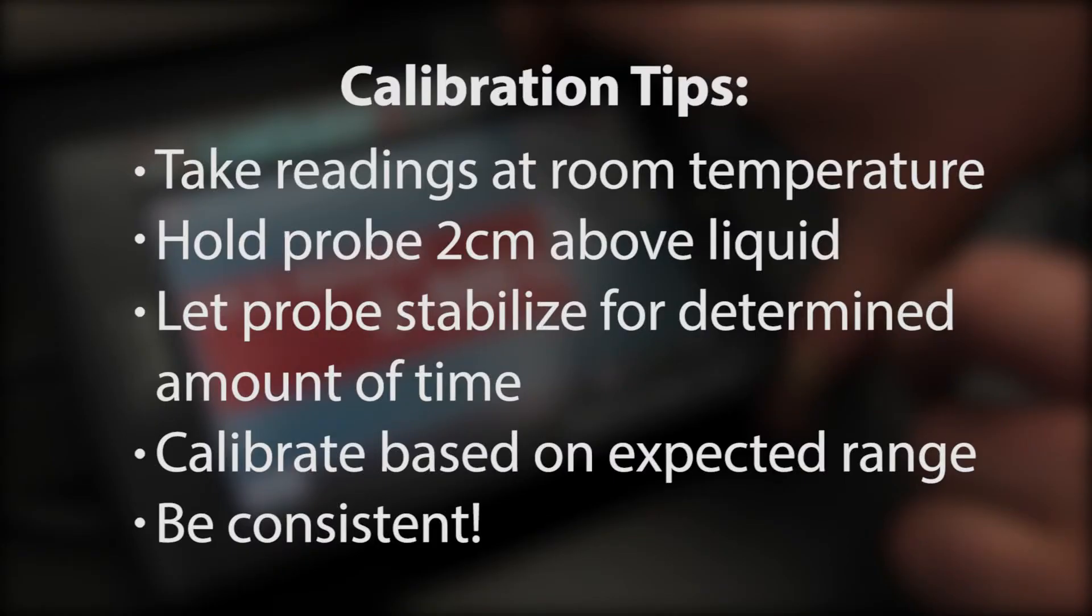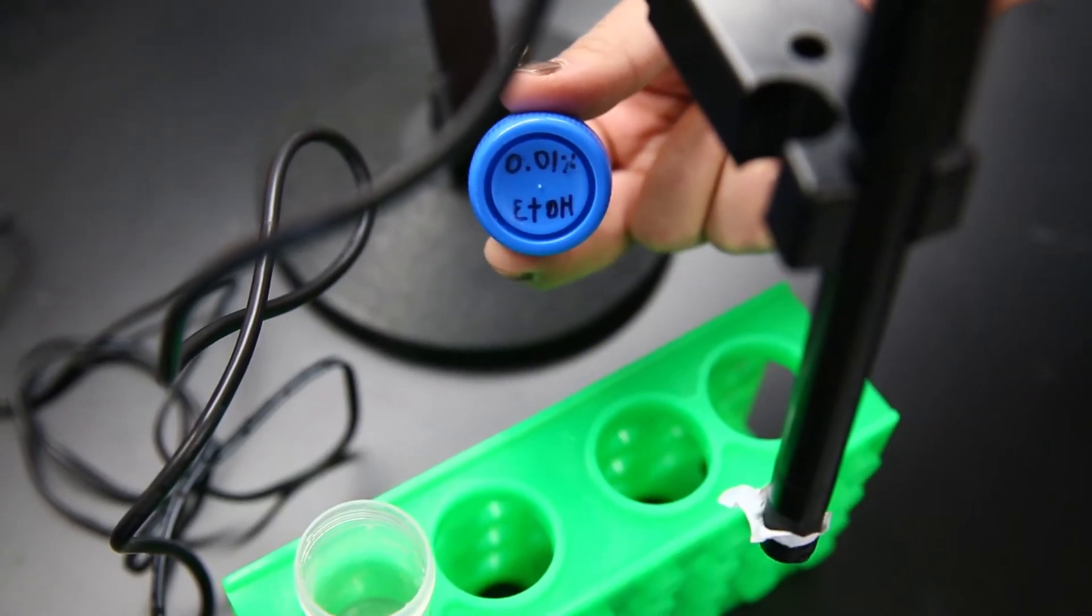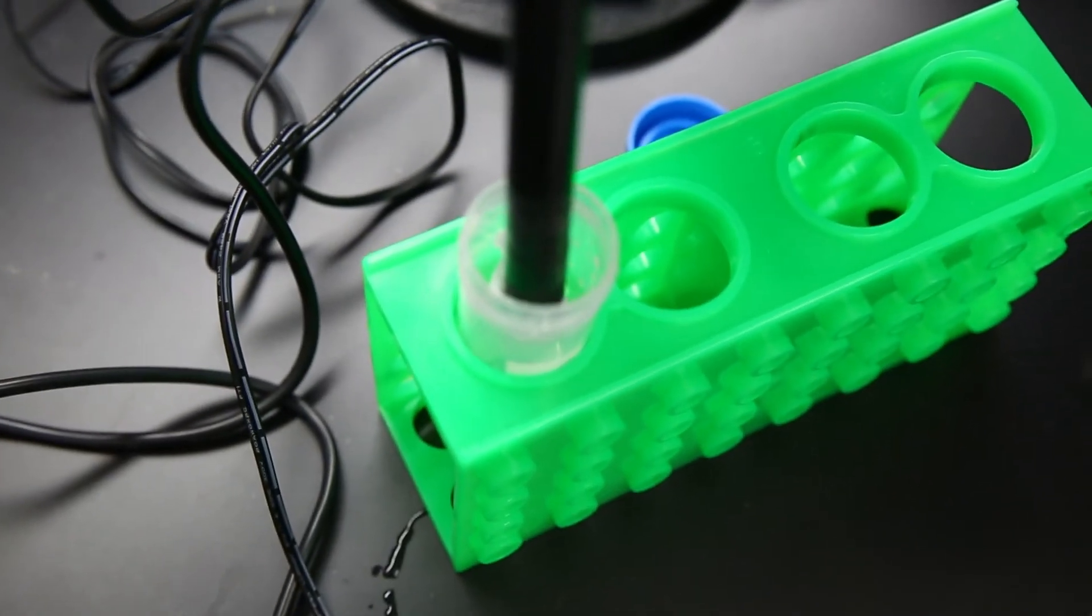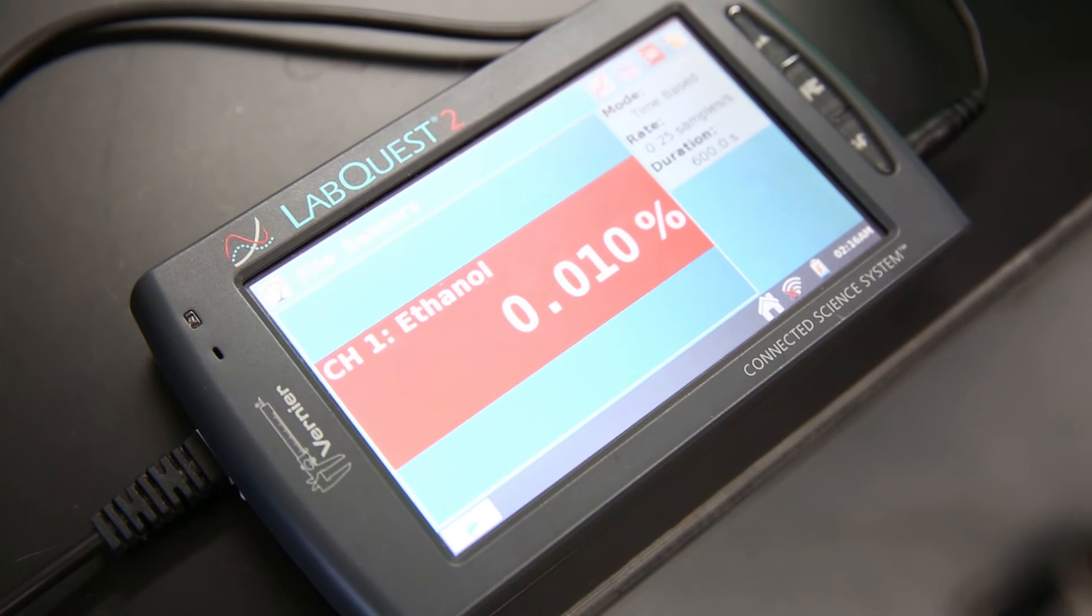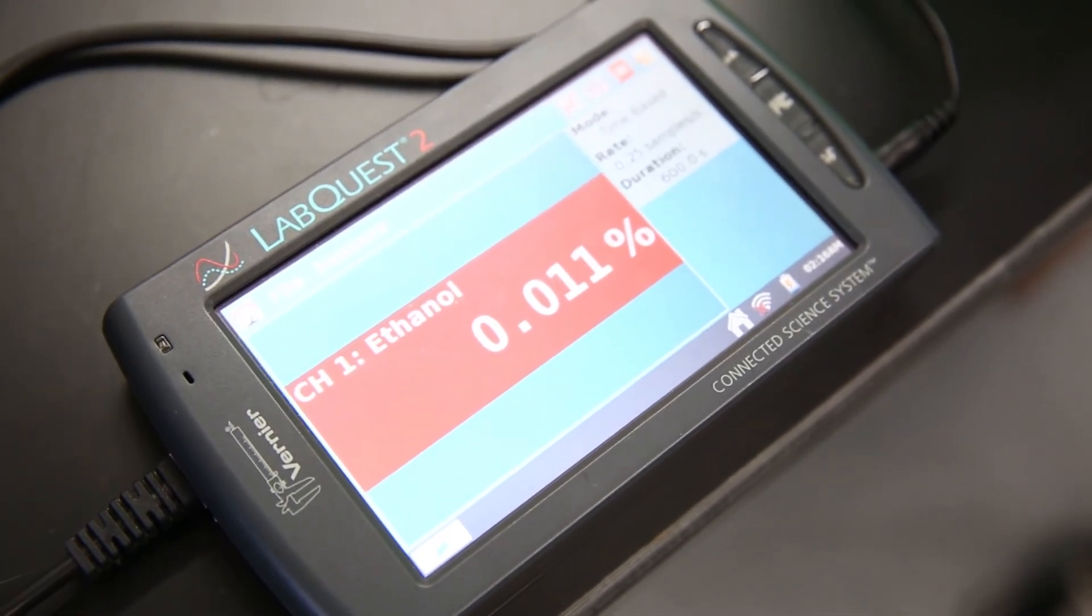When calibrating probes, the idea is to replicate as best you can the conditions that will be present for the actual readings. After calibration, check the accuracy of the probe by taking a reading of known condition. If they seem off, recalibrate and try again.